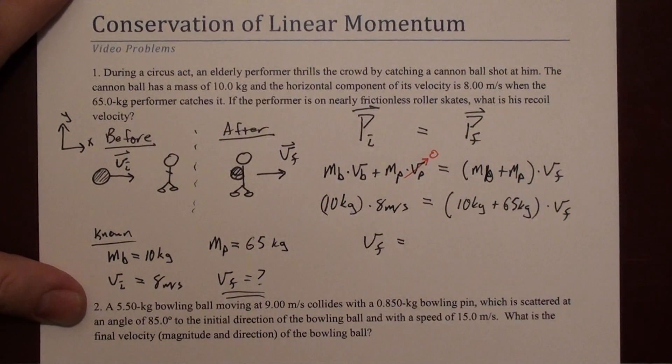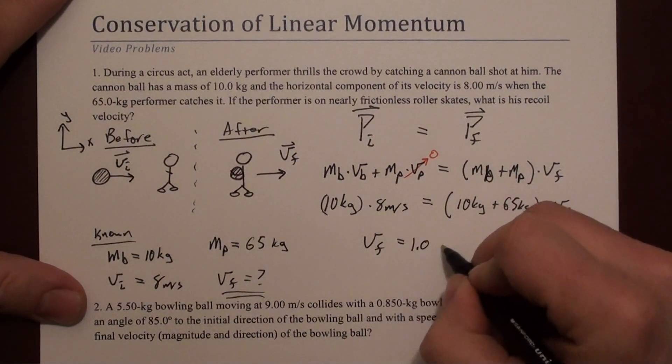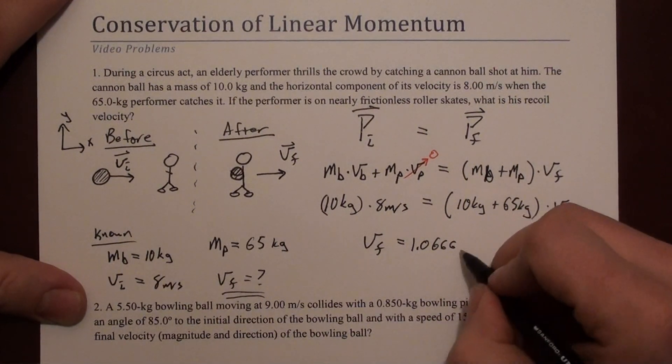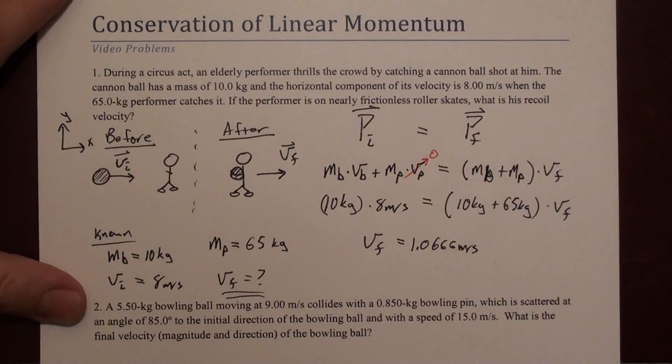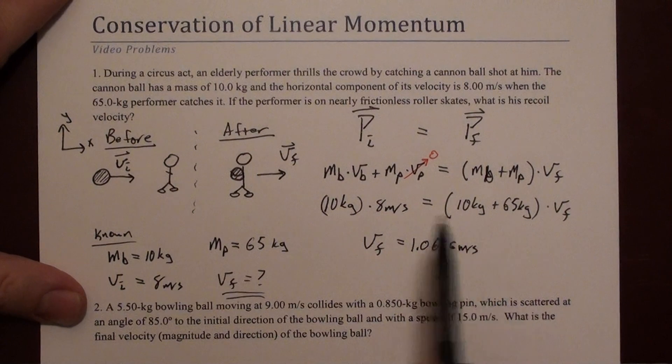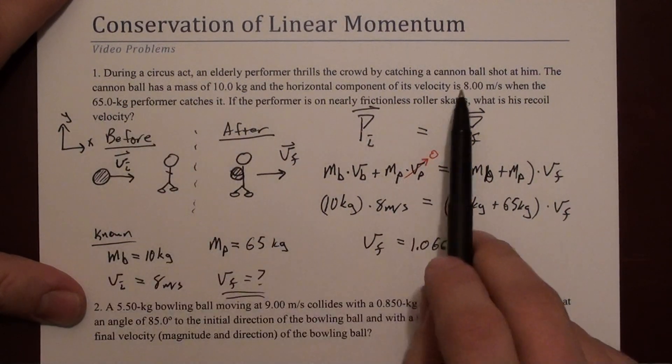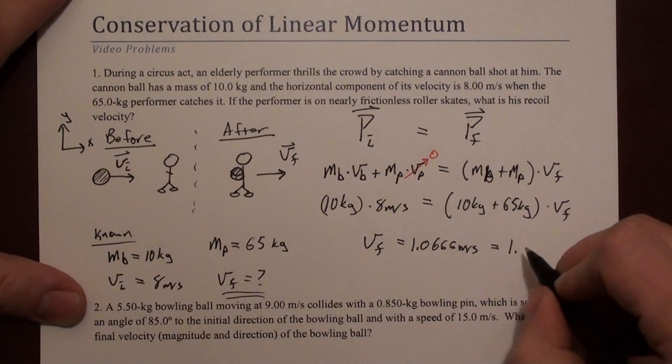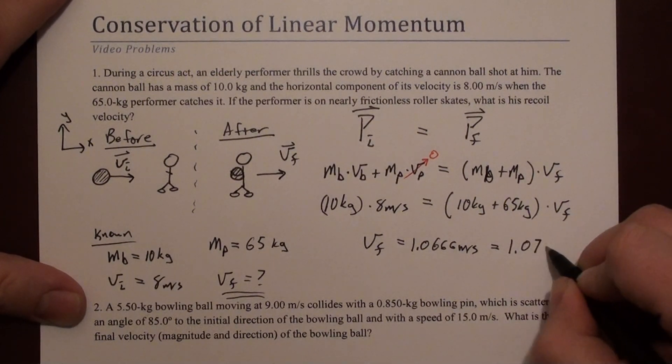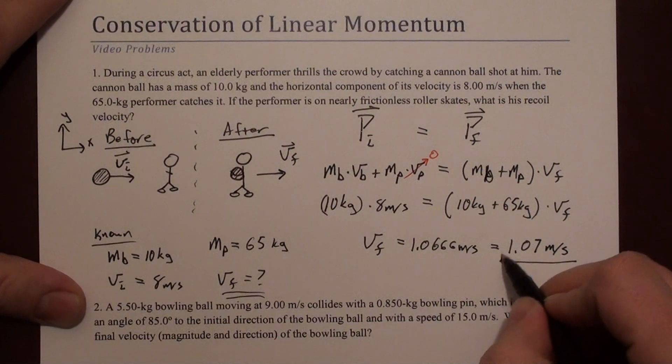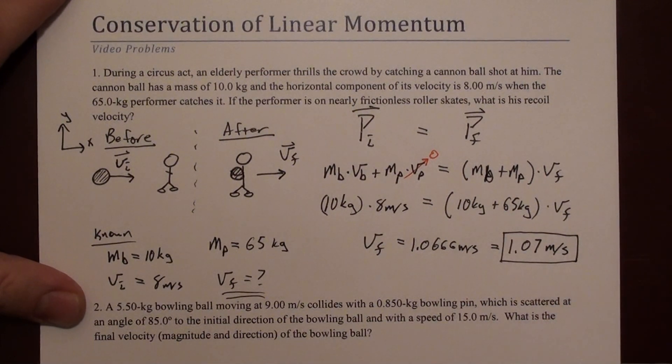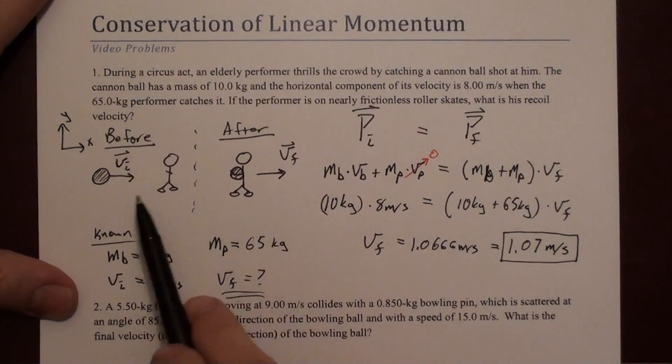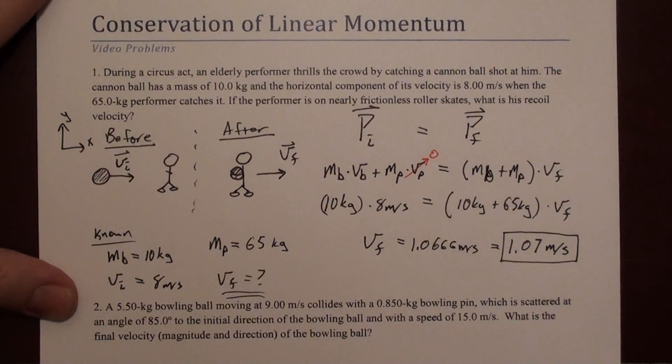If you do that math, you end up with 1.0666 continuing. If we look at the number of sig figs in this problem, we should round this to 3, so it's 1.07 meters per second. We also notice this came out positive, meaning the system moves to the right, which is what we expected.